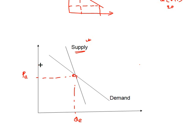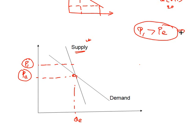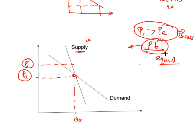Suppose the price has become higher than equilibrium. We want to know whether equilibrium can be achieved. When price is greater than equilibrium, there is excess supply, so the price has to go down to achieve equilibrium. When the price goes down, the quantity demanded increases and you reach equilibrium. At the higher price the quantity demanded was lower, but decreasing the price brings quantity demanded back up to equilibrium.